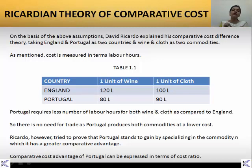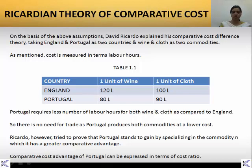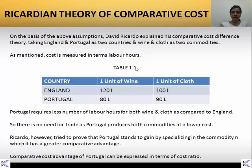On the basis of the above assumptions, David Ricardo explained the comparative cost difference theory taking two countries — England and Portugal — and two commodities produced by both countries: wine and cloth. As you can see in the table, the cost in terms of labour hours is mentioned for both countries producing both commodities. England produces one unit of wine requiring 120 labour hours and one unit of cloth requiring 100 labour hours, whereas Portugal requires 80 labour hours to produce one unit of wine and 90 labour hours to produce one unit of cloth.